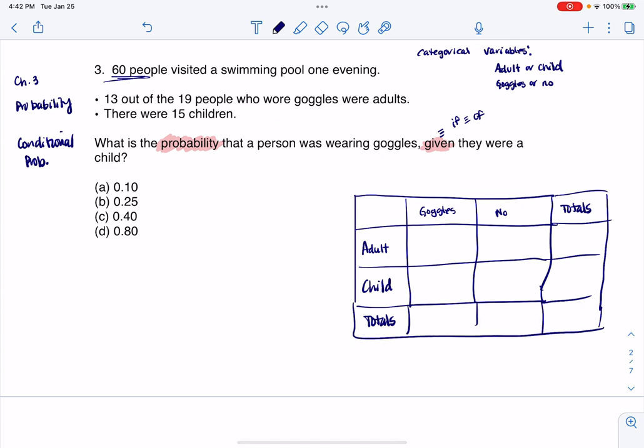The first number I see is 60. If there are 60 people total, I'm gonna put that there. I see here: 13 out of 19 people who wore goggles were adults. So there were 19 people who wore goggles - I'll put the 19 in the goggles total. They said 13 of those were adults, so I'll put 13 here. And by complement, there had to be a six here.